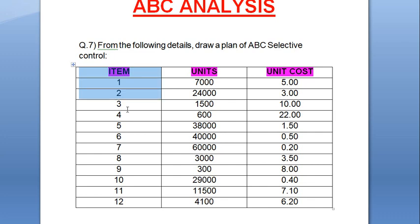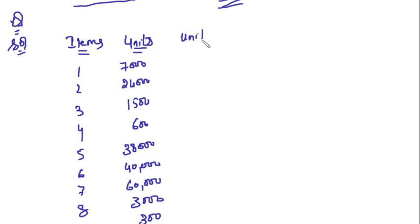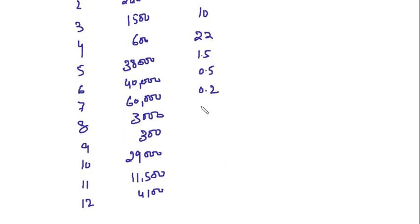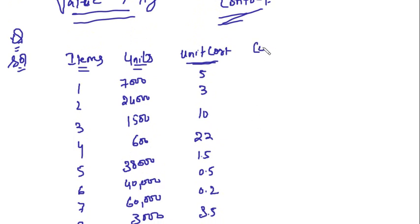So this is the question. We have written down the items and the units. Now we will write down the unit cost. The unit costs are: 5 rupees, 3 rupees, 10 rupees, 22 rupees, 1.5, 0.5, 0.2, 3.5, 8, 0.40, 7.10, and 6.20. This is the cost of one unit.